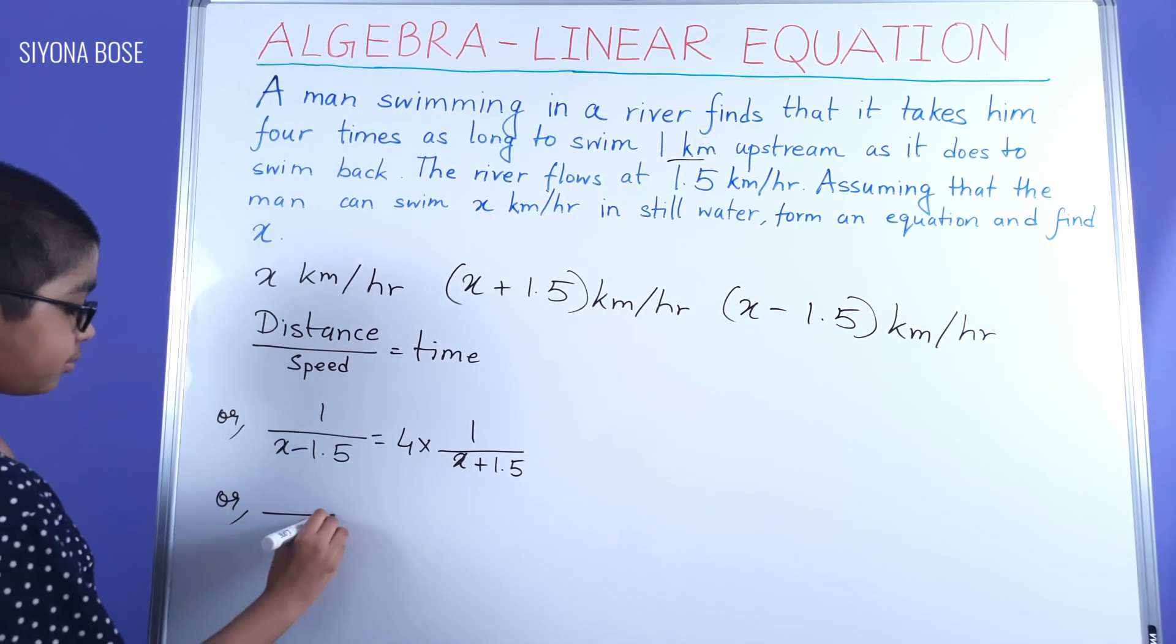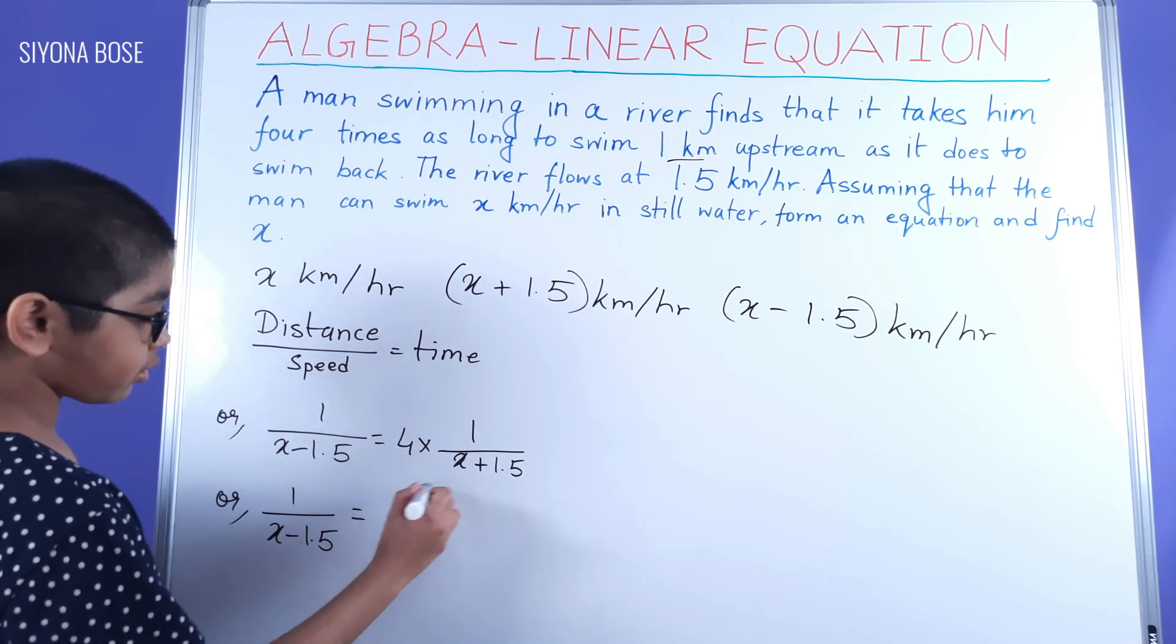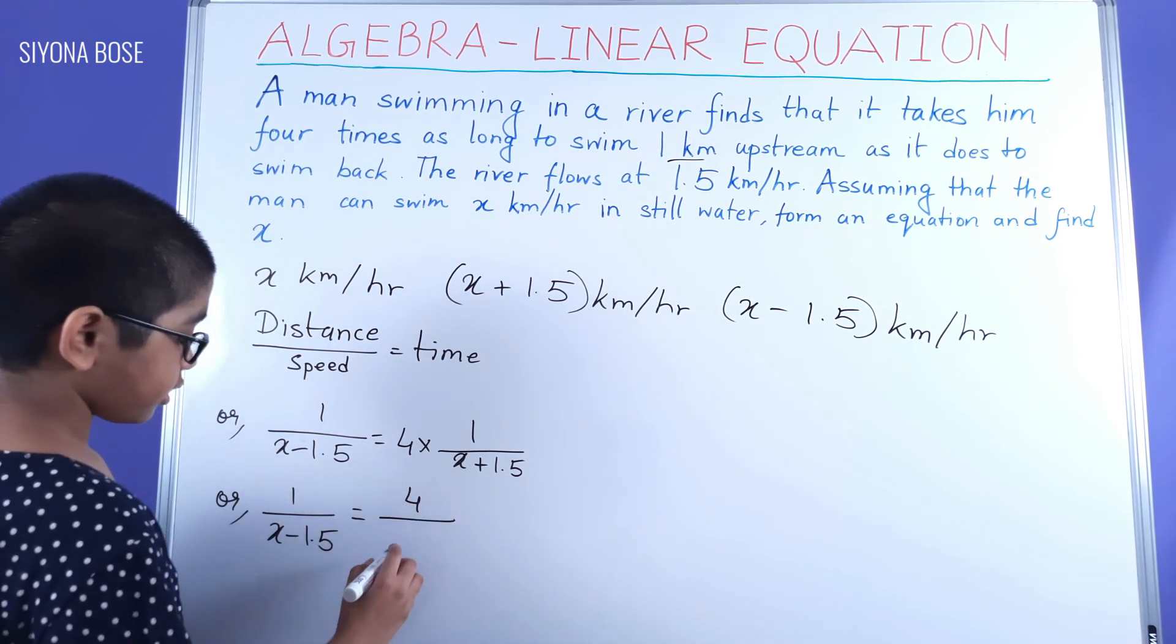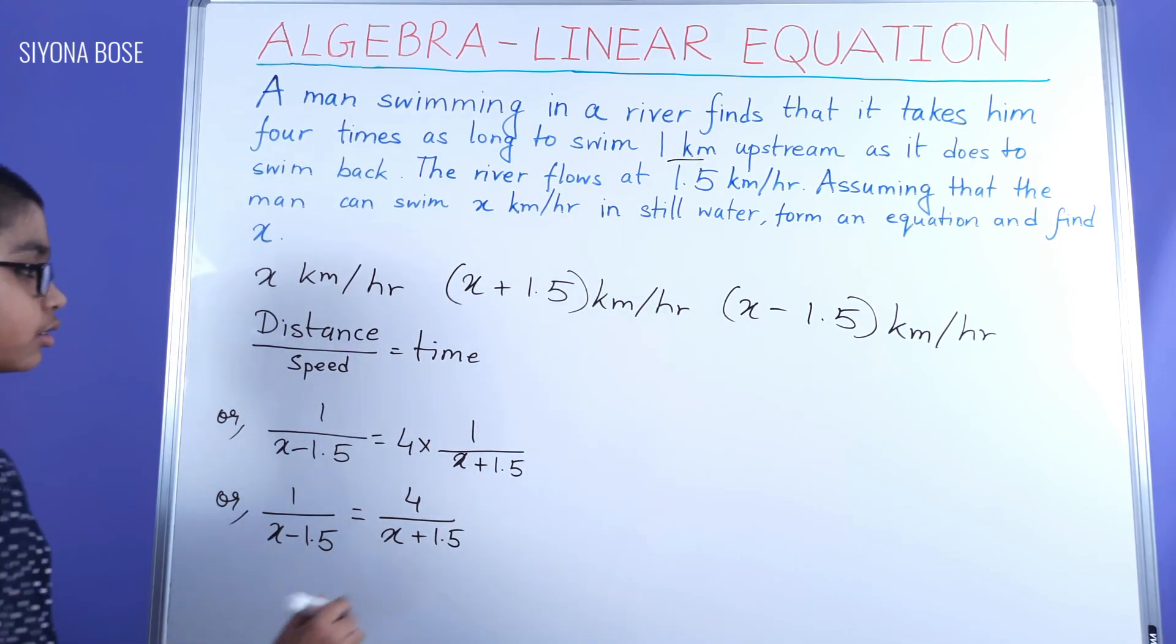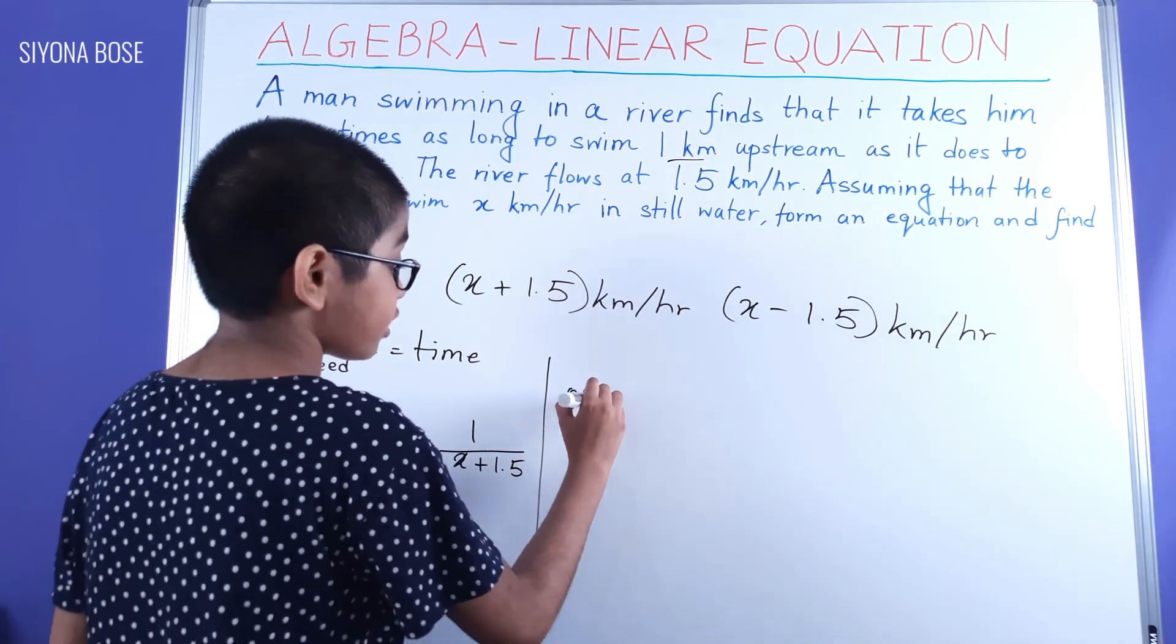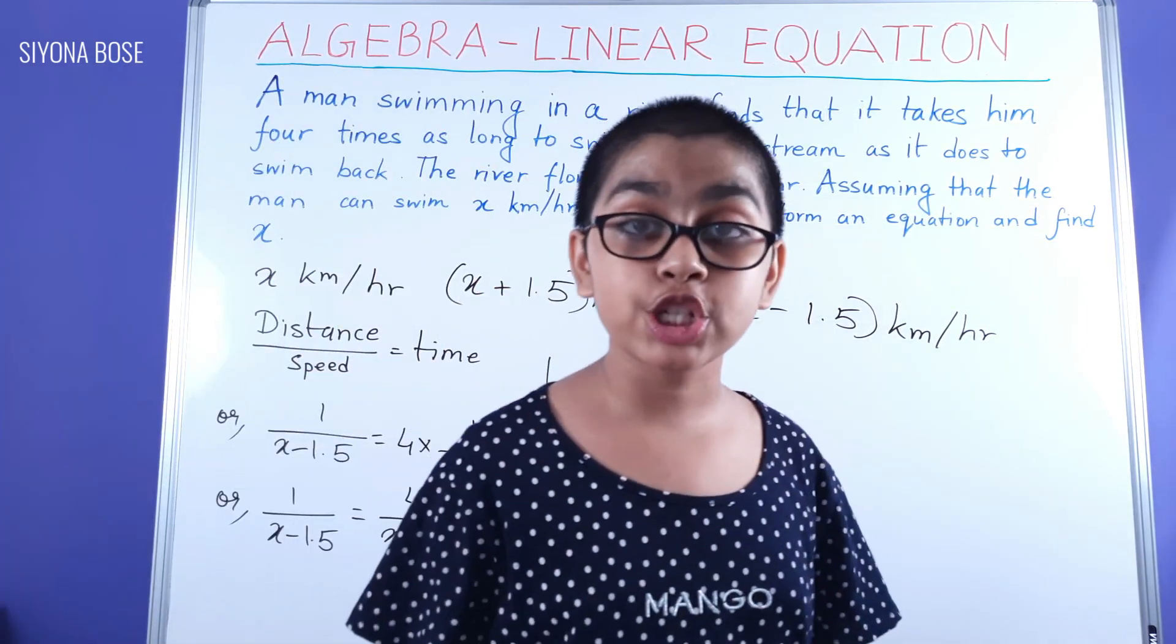Or, equal to - let's take that into the denominator. Then, moving on to the rest of our equation. We get, doing cross multiplication...